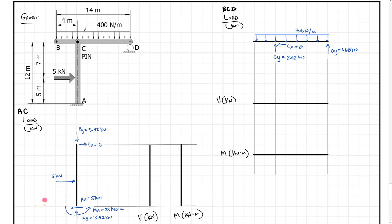For member AC, I'm going to take the local axes from the bottom up. The local x-axis is always lined up with the member, going straight up. For BCD, I'm going to start at the left and go all the way to the right. Even though point C is in the middle of the member, we start on the left-hand side and go along the axis to the right.